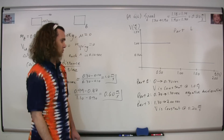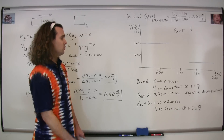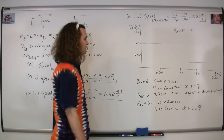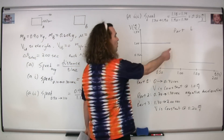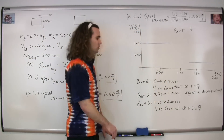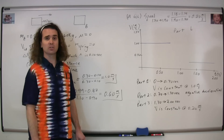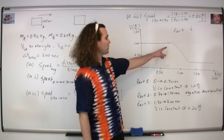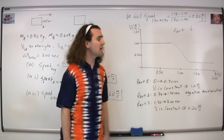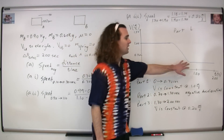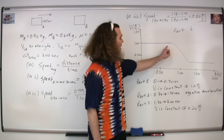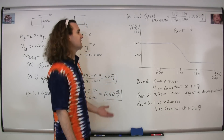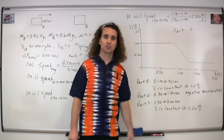Now we can come back to part two. Part two has a negative acceleration, decreasing in velocity from 1.0 to 0.20 meters per second. We draw a line with a negative slope connecting the two constant-velocity sections. There are little curves at the transitions because this is a real object and it needs time to change velocity.